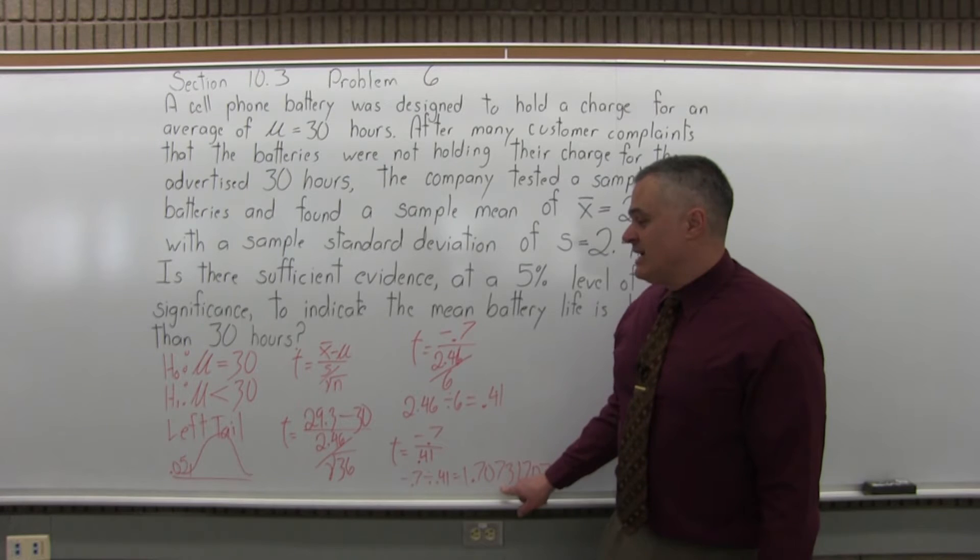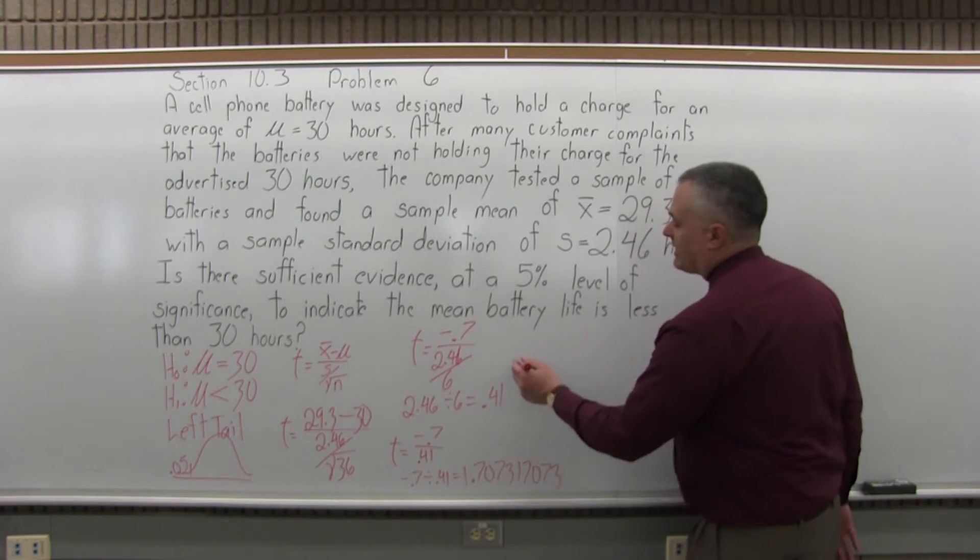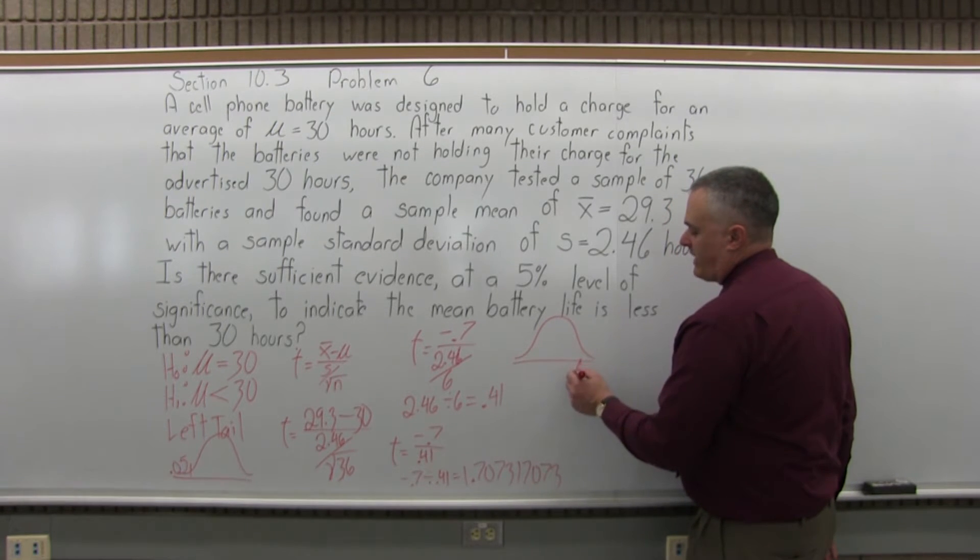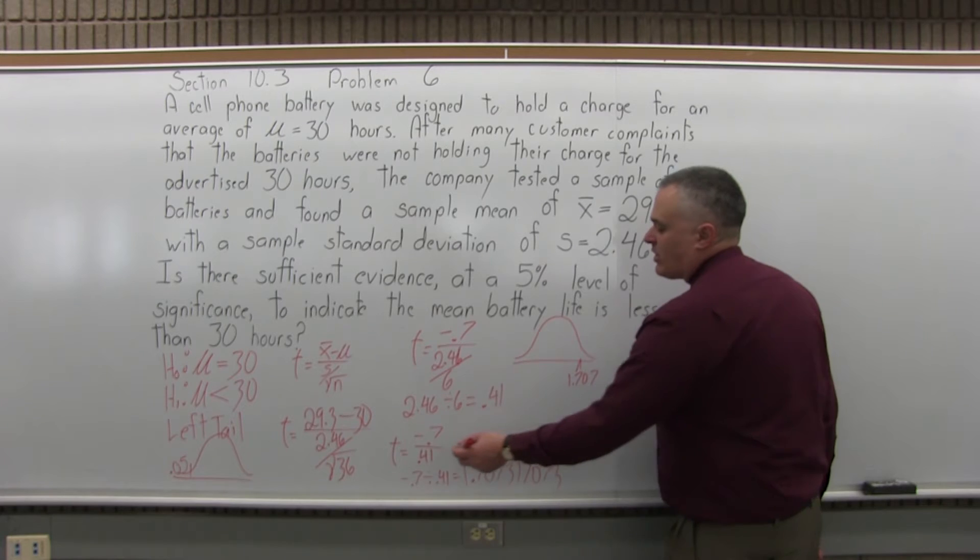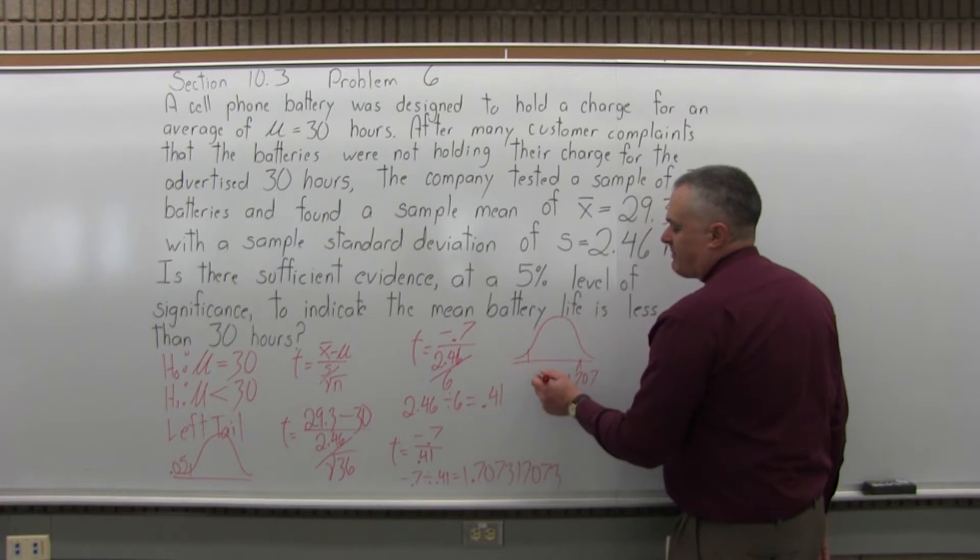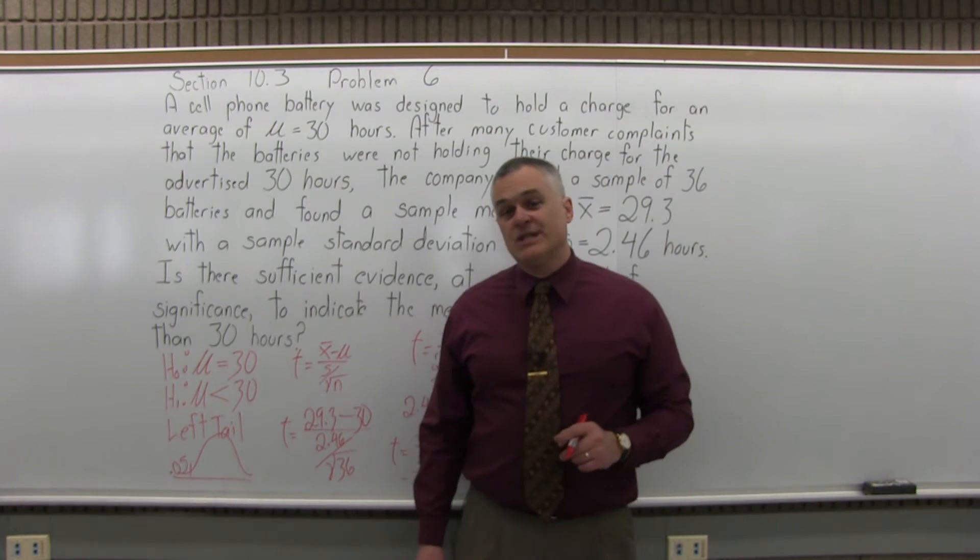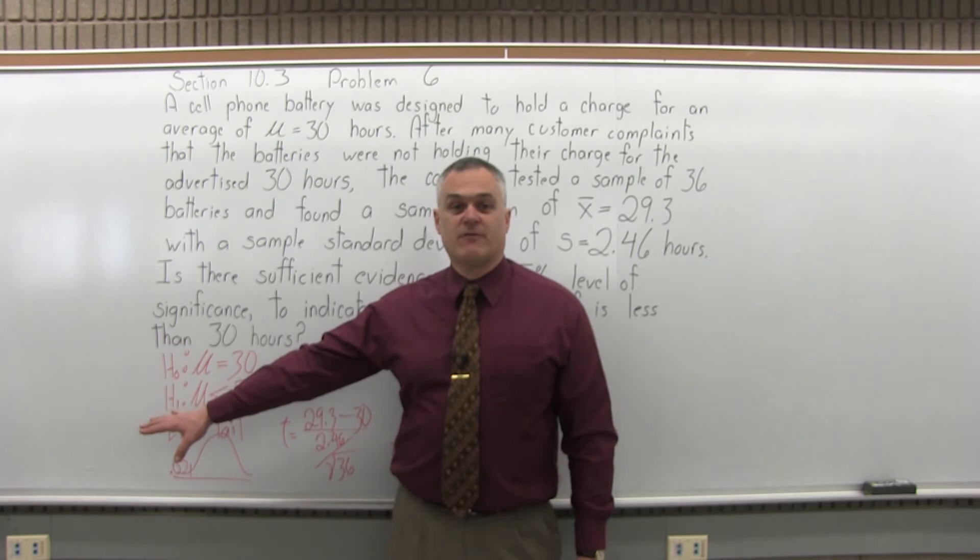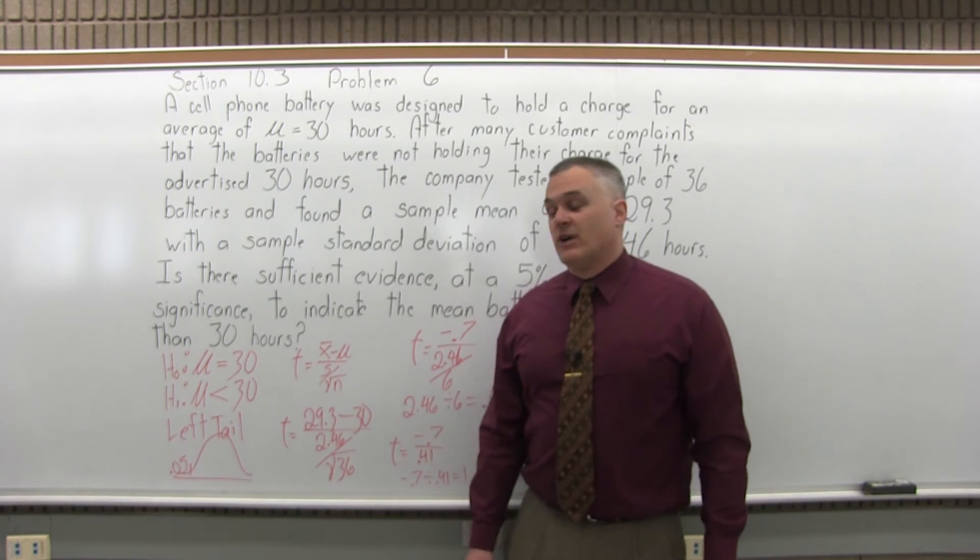Now the question is, does that value go out into the critical region? Now, first of all, technically what we have is the other end of the graph. That 1.707 something is really on the right end. That's the value for the positive. But because it's symmetric, it's the same number and it's on the left side too. Now, the question is, is that 1.707 far enough to the left that it gets into that last leftmost 5%? So what we have to do for that, the fifth step, is determine what the critical value for t is.